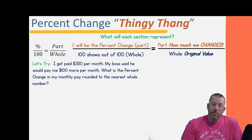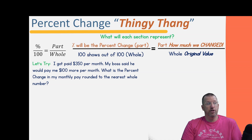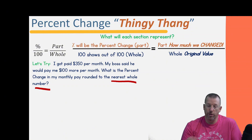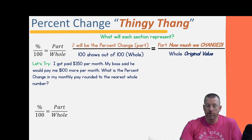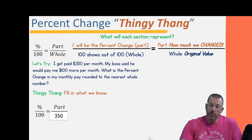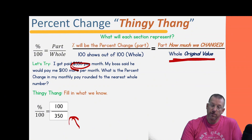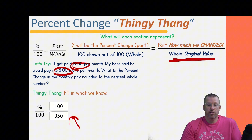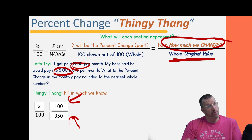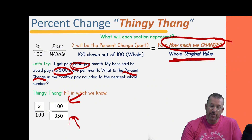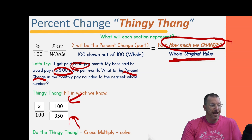Let's try an example. I get paid $350 per month and my boss is going to pay me $100 more per month. What is the percent change in my monthly pay, rounded to the nearest whole number? We know 350 is our original value — it goes on the bottom. The change is 100 — it goes on top. The percent is unknown, so that's our variable x. We set up: x over 100 equals 100 over 350.